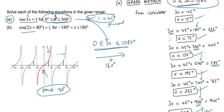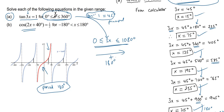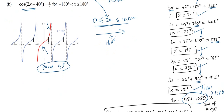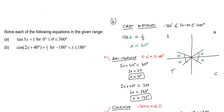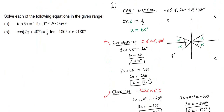For part B, I'm going to use the CAST method, because I think the CAST method is better for part B. Part B is more like an exam question because we've got a more complicated range, and we've got cos(2x + 40°). I think the CAST method is superior for something like this.